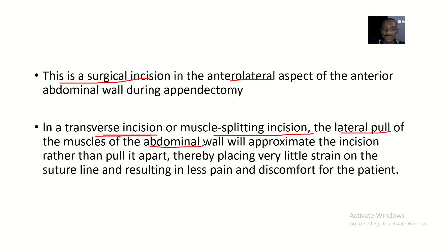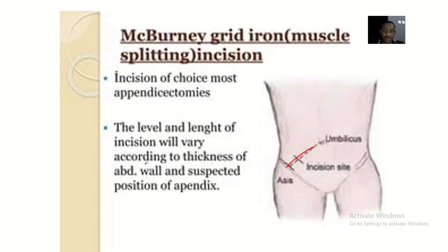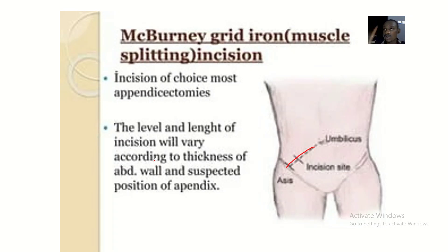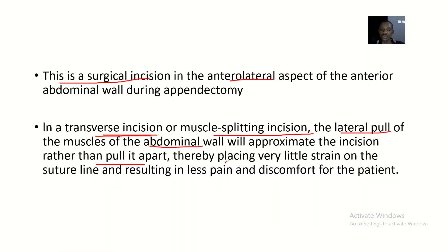The lateral pull of the muscles of the abdominal wall will approximate the incision rather than pull it apart. When you make an incision at this region, it is in line with the way the muscles are oriented, so these muscles will not pull it apart. You are not cutting across the muscles but cutting along them.